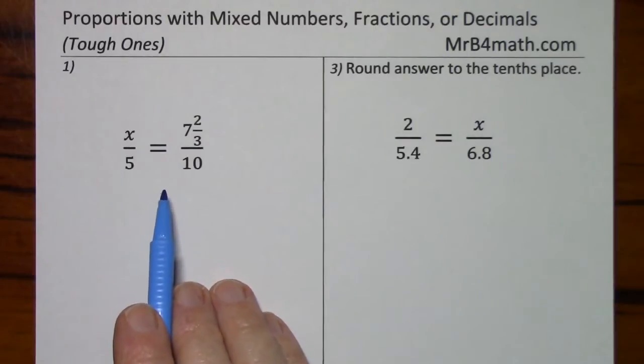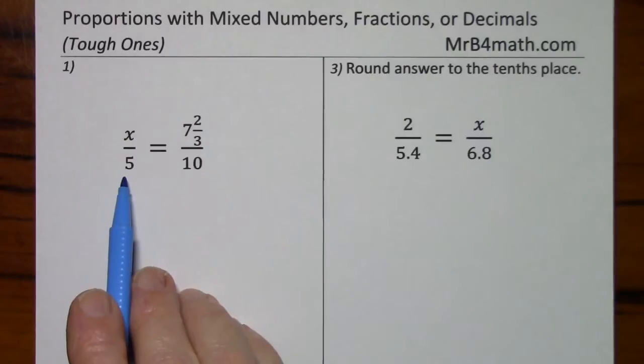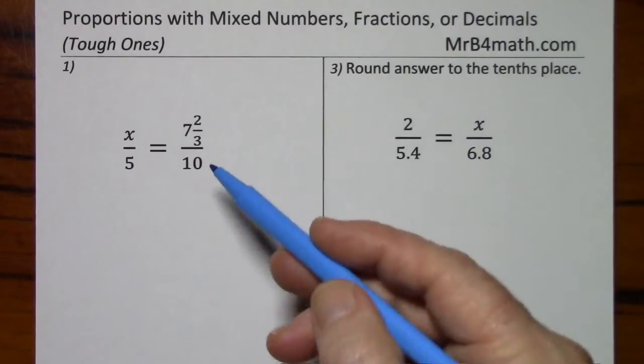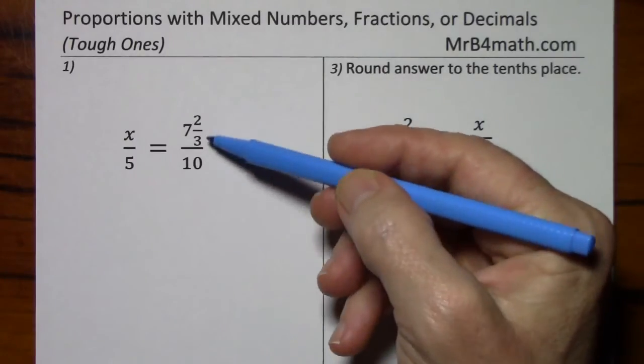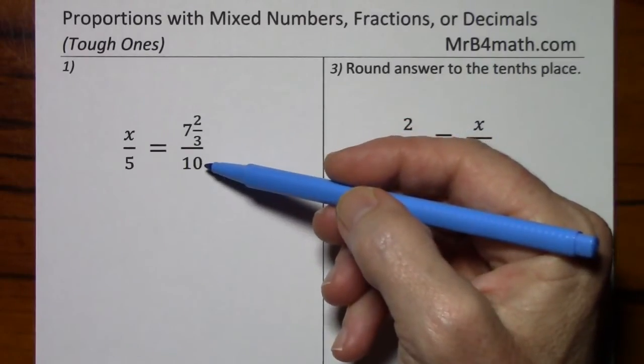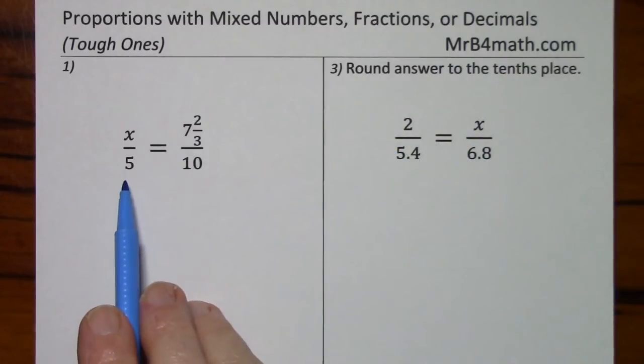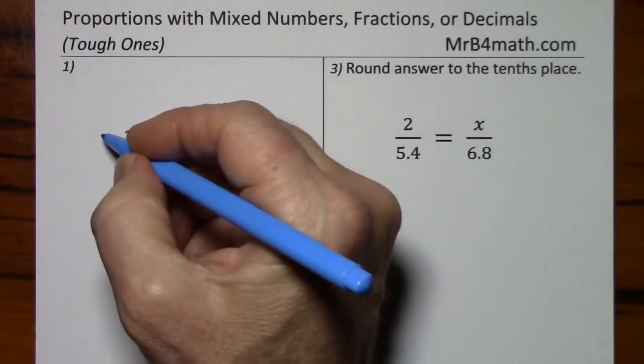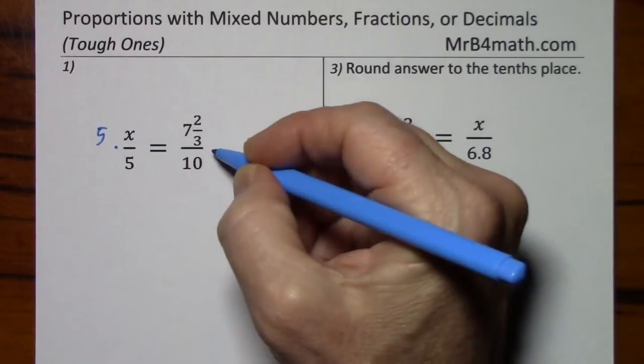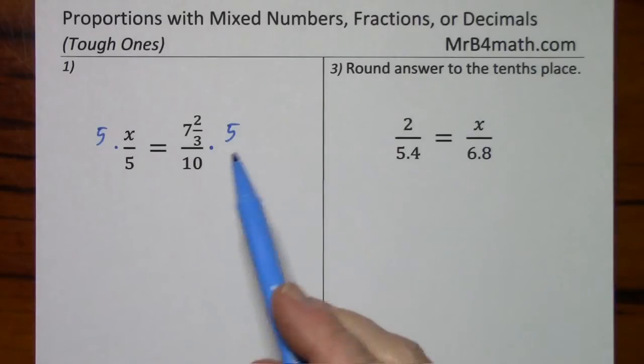Looking at our first equation, to get x by itself, all I need to do is get rid of the 5. On this side, this fraction is a bit of a mess. It's a complex fraction. You have a mixed number over a whole number. Normally, I might just clean this up first.